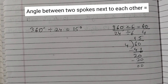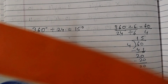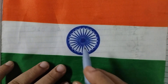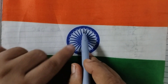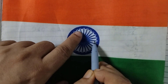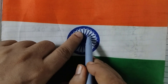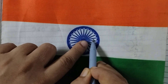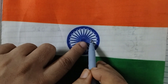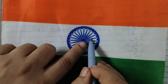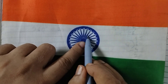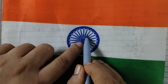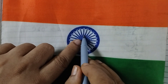The next part of the question asks for the largest acute angle formed between two spokes. Looking at the Ashoka Chakra, one line and another line form a 90-degree angle. In between those two spokes we can count 5 intervals. Since each interval is 15 degrees: 15×1=15, 15×2=30, 15×3=45, 15×4=60, 15×5=75, and 15×6=90.